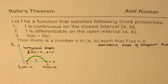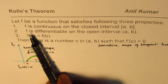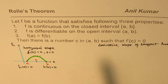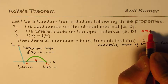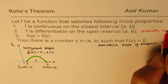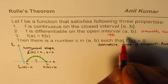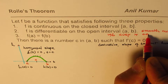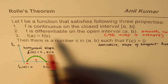Now let's understand condition two: f is differentiable on the open interval (a, b). Differentiable means it is a smooth curve — that means without any cusps or corners. That is what we mean when we say f is differentiable on the open interval (a, b).